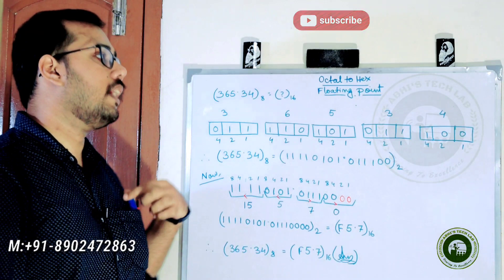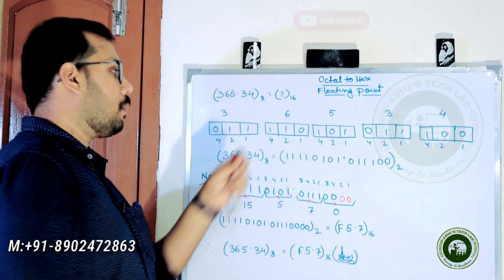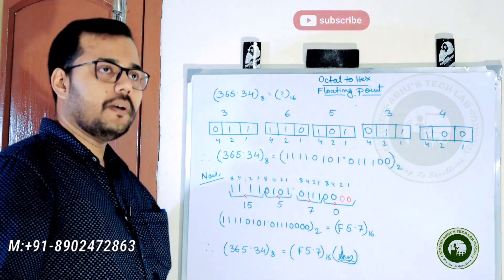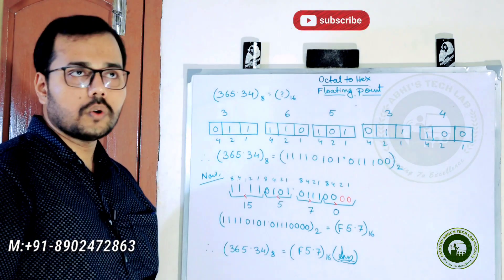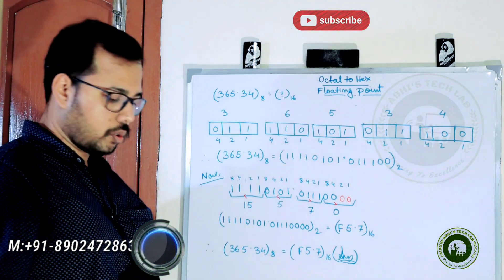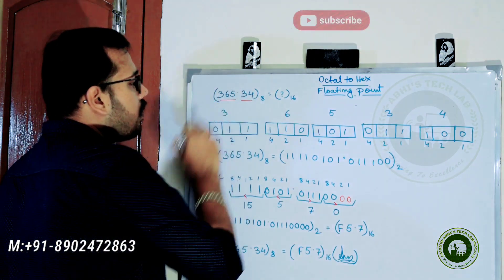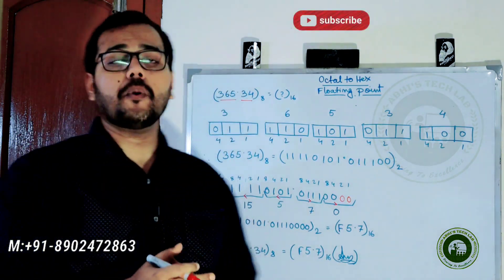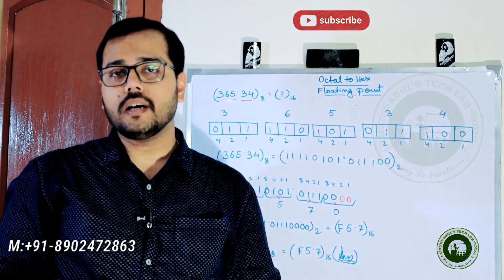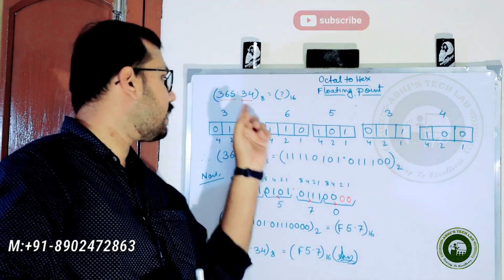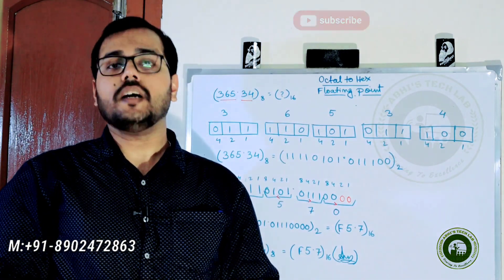The procedure is the same. Now we have number 365.34, it is an octal number. The highest digit in octal is 7.